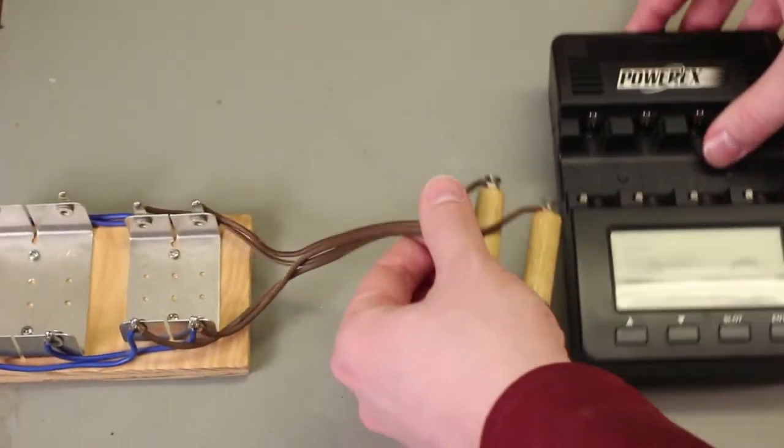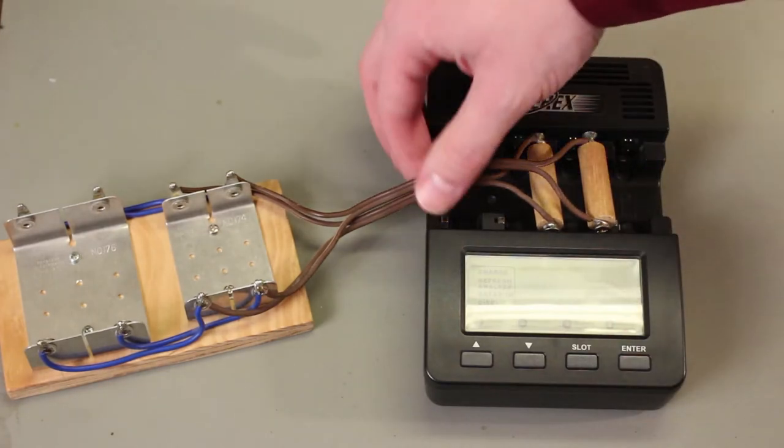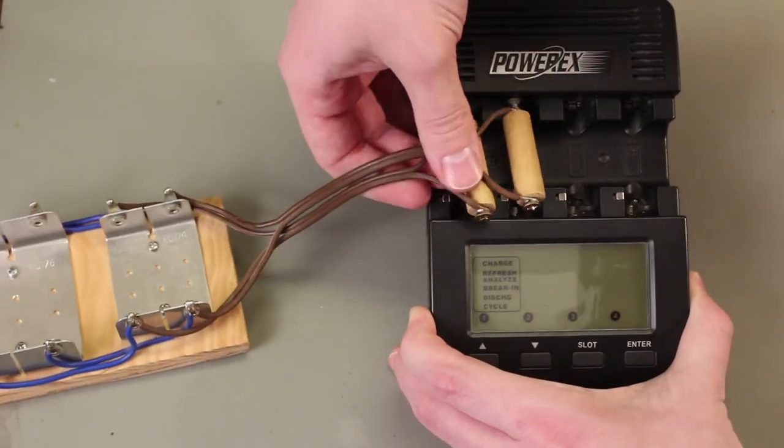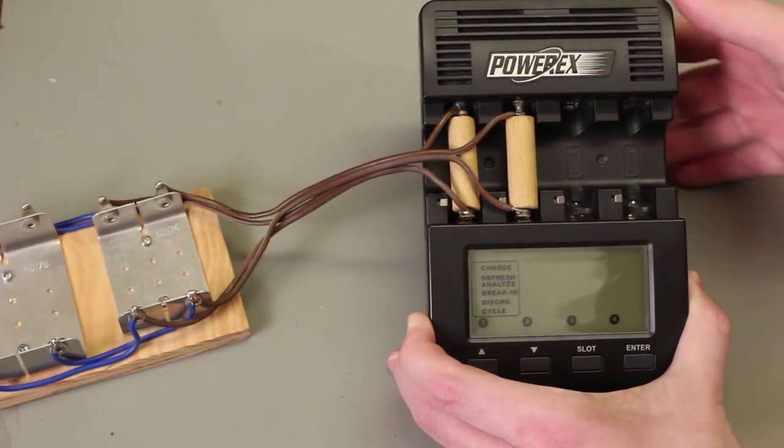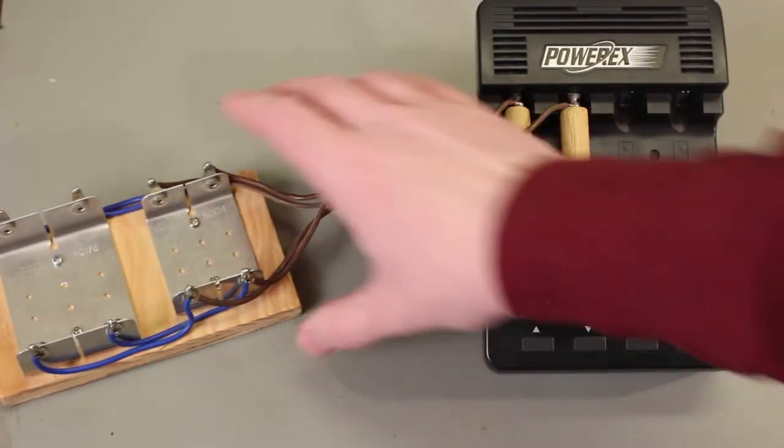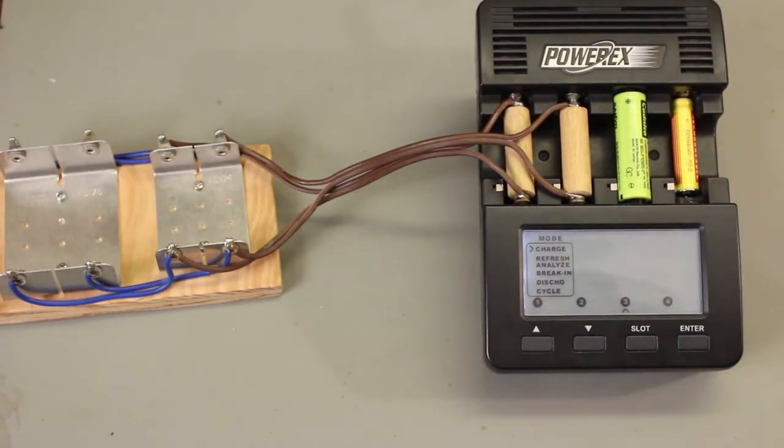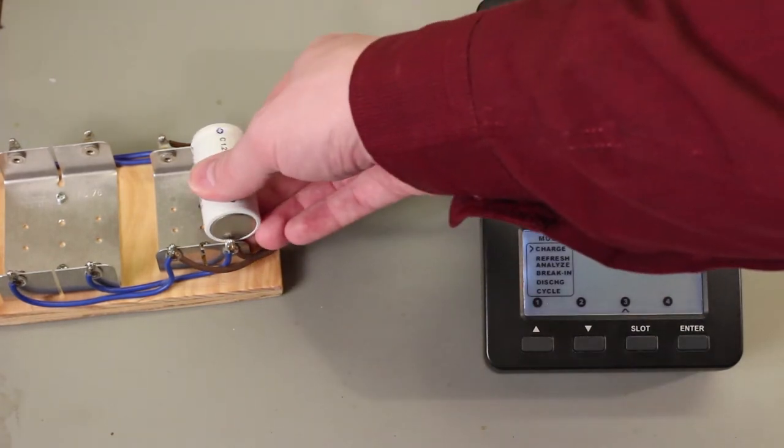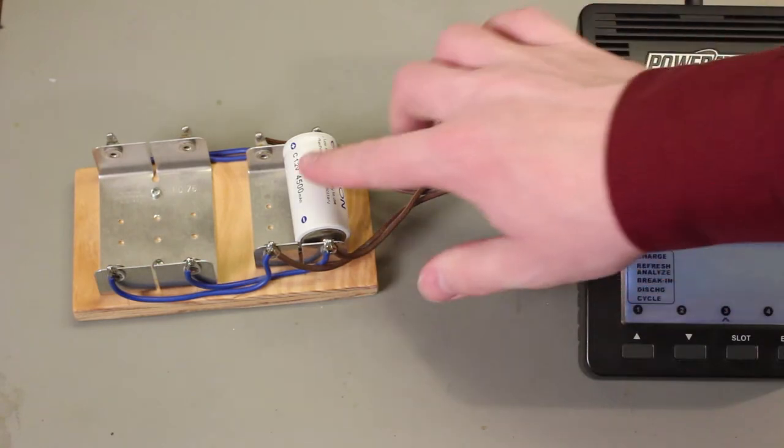Then this whole device just clips in. Make sure I got that on camera. This just clips in in place of those double A cells right there. So the way I built this device, I can still charge two double A's or triple A's over on this side, and I can charge two Cs or two Ds over on the adapter.